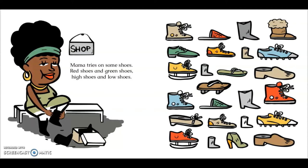Looks like they're in a shop for shoes. Mama tries on some shoes. Red shoes and green shoes. High shoes and low shoes. Do you see all the shoes that they are to choose from? Which ones do you like? I like the yellow skates.